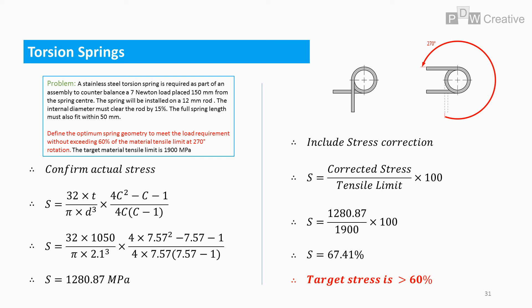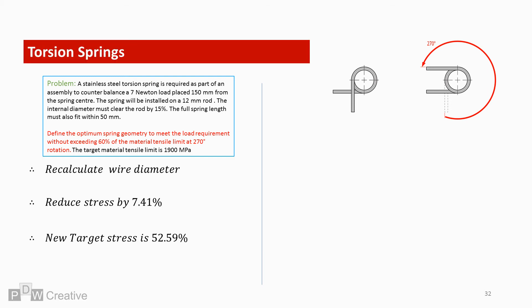We are overstressed by 7.41%. So I'm going to reduce the target by this amount. So the new target is 52.59% of the tensile limit. 1900 times 0.5259 gives us a new stress target of 999.13 MPa. This new target is still a placeholder but should allow us to recalculate and find a wire diameter to meet the original 60% stress target.